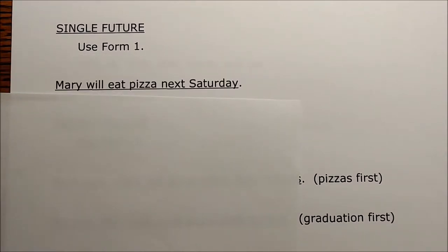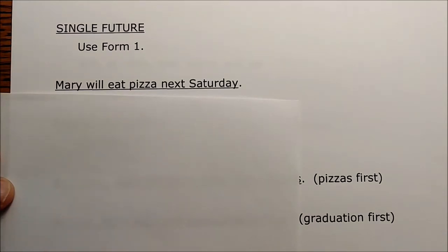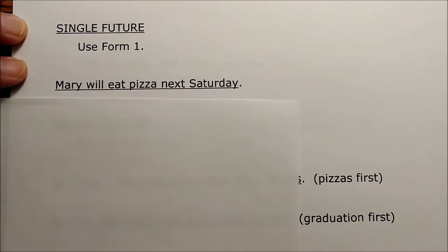The next tense is the single future tense — just one action that will happen in the future. We use Form One of the verb. For example: 'Mary will eat pizza next Saturday.' The action happens in the future, it is one action, and it tells when it will happen. You could also say 'Mary will eat pizza' without a specific time — future is all we need to know.